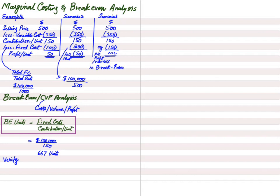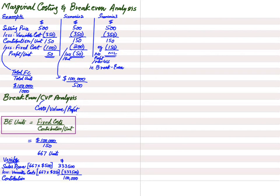Let's verify: if selling 667 shirts at $500, total revenue = $333,500. Buying 667 shirts at $350, variable cost = $233,450. Contribution = $100,000. Deducting fixed cost of $100,000, we get no profit, no loss. This confirms 667 is the minimum number of shirts to sell to reach break-even.